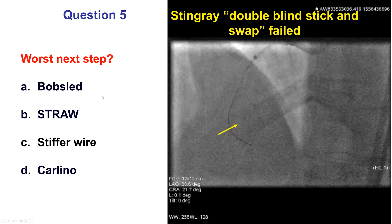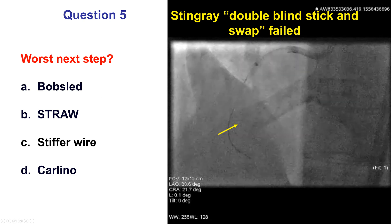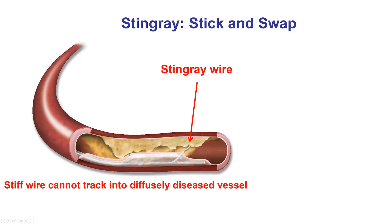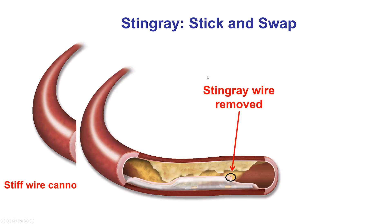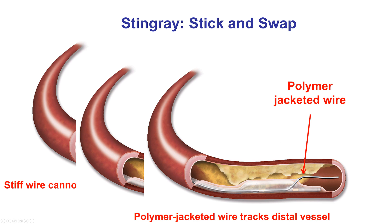The question is what would be the best next step: the bobsled technique, the straw technique, a stiffer wire, or the Carlino technique? The stick-and-swap involves positioning the stingray balloon distal to the distal true lumen, performing a puncture using a stiff wire — stingray or sometimes Hornet 14 or Confianza Pro 12 — then removing that stiff wire and inserting a polymer-jacketed wire. The Pilot 200 is the most commonly used one, able to more easily track through that entry point into the distal true lumen and further down the vessel.